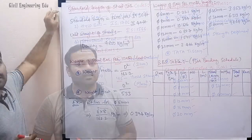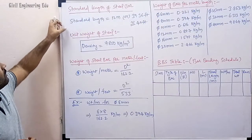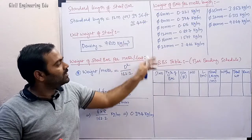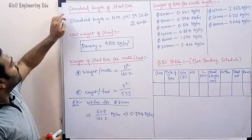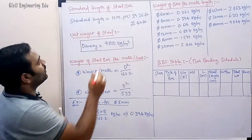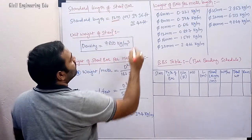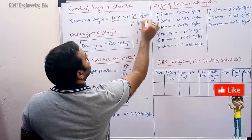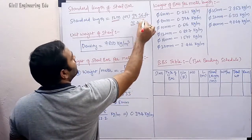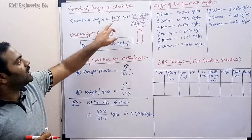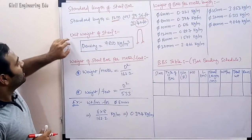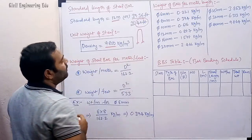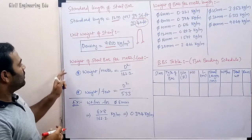The standard length of a steel bar is 12 meters, which is approximately 39.36 feet or roughly 40 feet. Each bar has a total length of 12 meters or 40 feet approximately. The unit weight of steel — that is, the density of steel — is 7850 kg per meter cube.